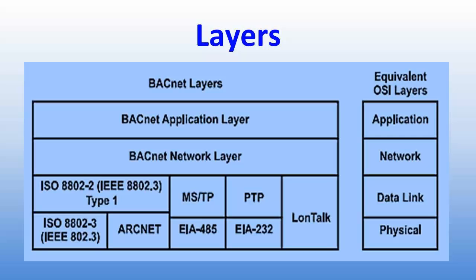BACnet has a layered protocol architecture based on a collapsed version of the Open Systems Interconnection OSI model. Layers 1, 2, 3, and 7 of the OSI model are used. Common application layer and network layer protocols are used with any of four options for local area networking. Technologies include point-to-point protocol suitable for dial-up telephone communications. The network layer provides a way to interconnect dissimilar LANs to form an internetwork.